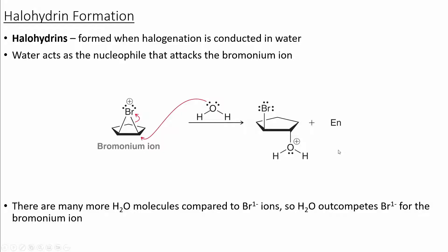The next reaction is similar to halogenation, but instead of bromine acting as the second nucleophile, we're going to have water act as a second nucleophile. Halohydrins are formed when we employ the halogenation reaction in water. In this case, the water acts as a nucleophile on the bromonium ion, producing a 1,2-substitution pattern with the halogen in one position and an alcohol in the next position.